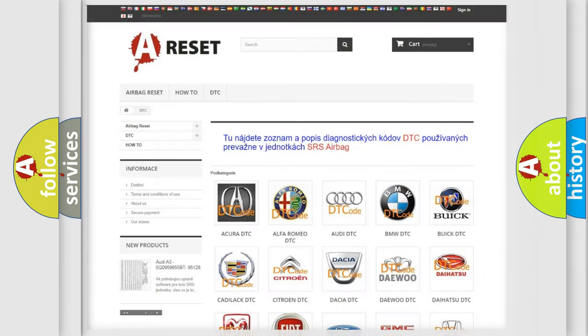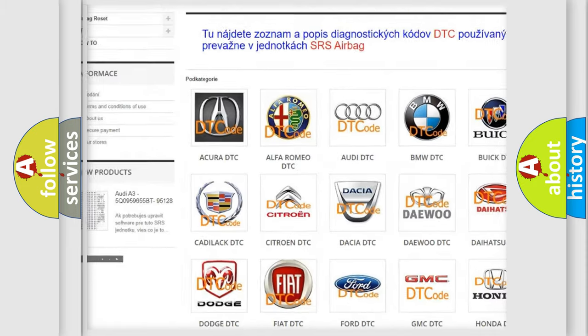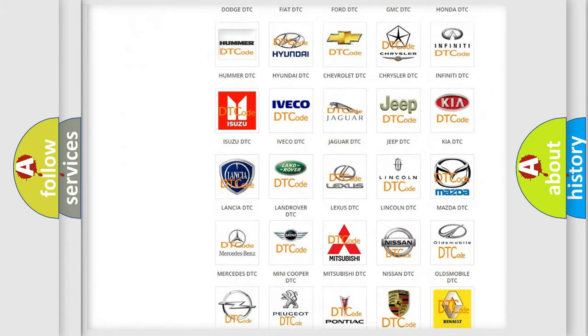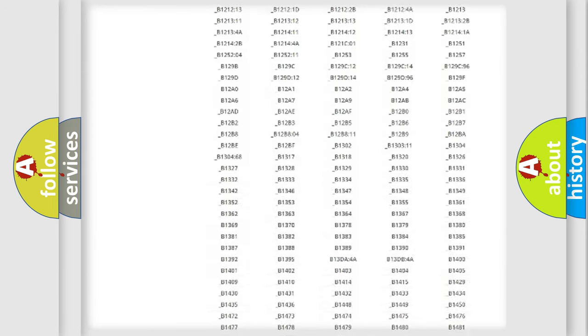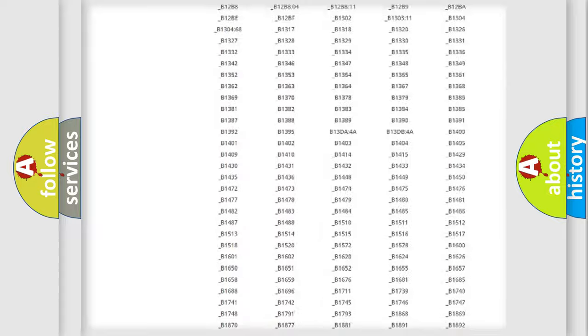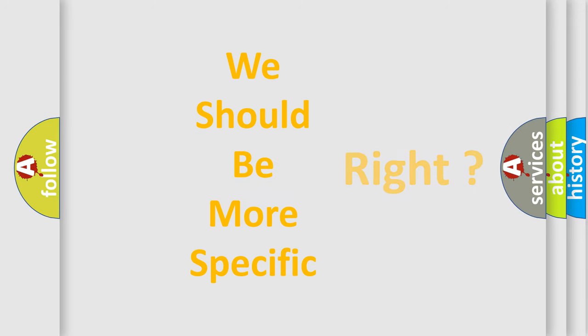Our website airbagreset.sk produces useful videos for you. You do not have to go through the OBD2 protocol anymore to know how to troubleshoot any car breakdown. You will find all the diagnostic codes that can be diagnosed in Saturn vehicles, and many other useful things. The following demonstration will help you look into the world of software for car control units.